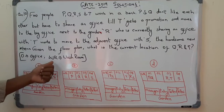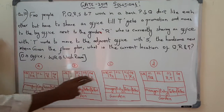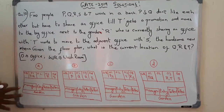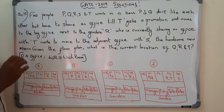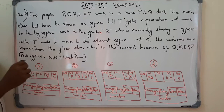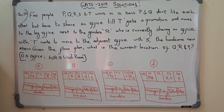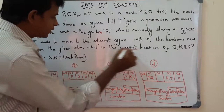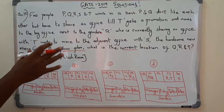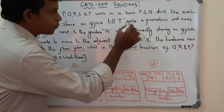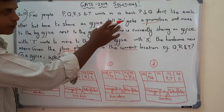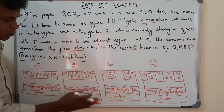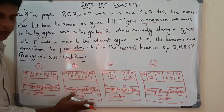O means office, WR means washroom, and in options A, B, C and D, some floor plans are given. Out of these 4 floor plans we have to choose the one which matches exactly — specifically the current floor plan, not after T gets the promotion.